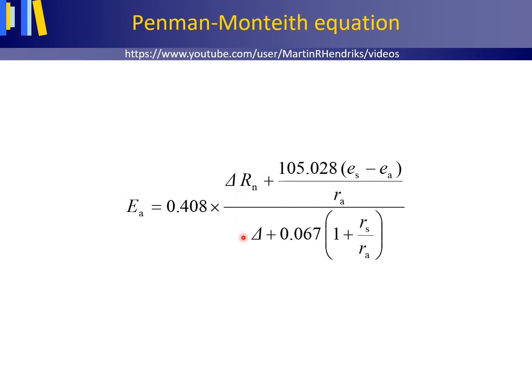Delta is the gradient of the saturation vapour pressure curve, or the Clausius-Clapeyron graph for water in kilopascal per degree Celsius, thus dependent on the temperature.